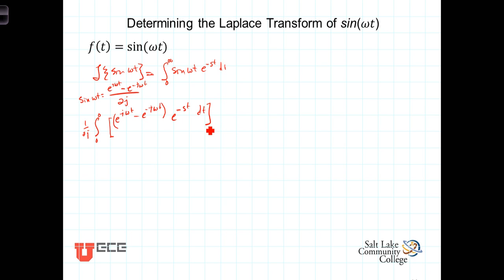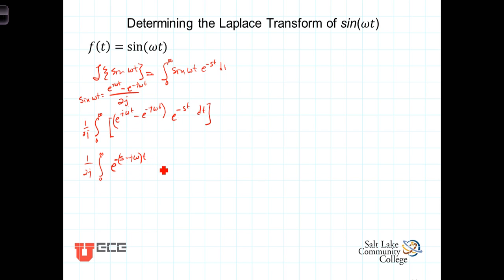Now let's distribute the e to the minus st term to both of these. We still have the 1 over 2j out in front, and we have the integral from 0 to infinity. Multiplying through, we get e to the minus s minus j omega, times t, minus e to the minus s plus j omega, times t, dt.